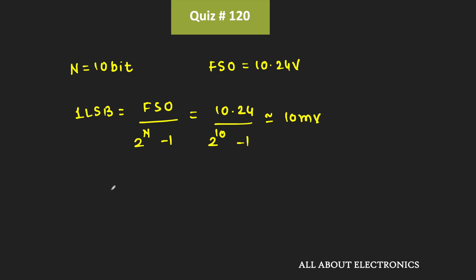So to get the accuracy of ±0.5 LSB, the change in this reference voltage should be less than or equal to ±5mV. Now this ADC is calibrated at the temperature 25°C.